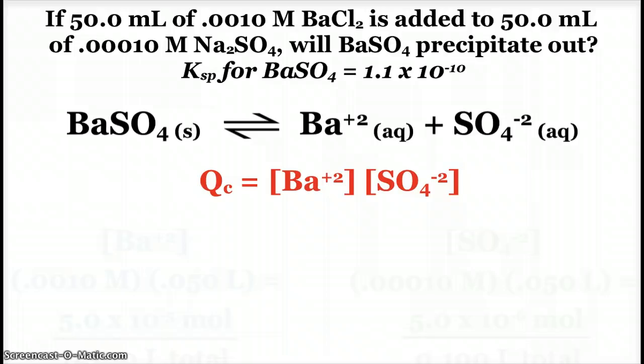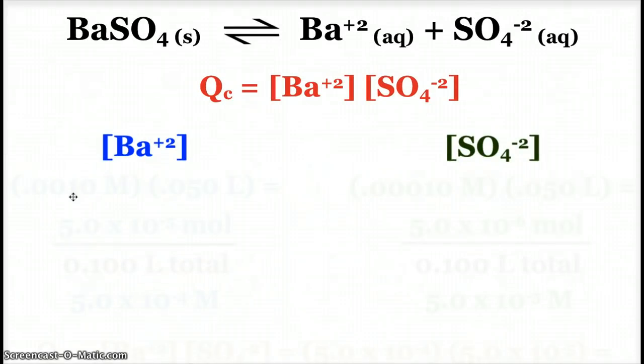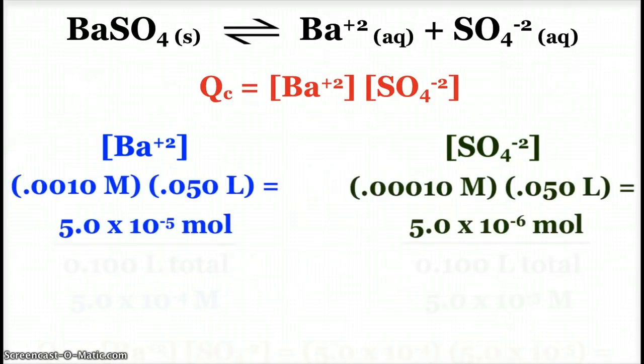I don't just have the numbers in the problem to plug in, so I have to find my barium ion concentration and my sulfate ion concentration. But I'm given volume and molarity, so I simply have to take molarity times volume in liters, and I get the moles of each of the ions present.